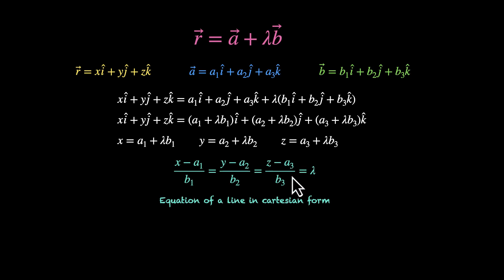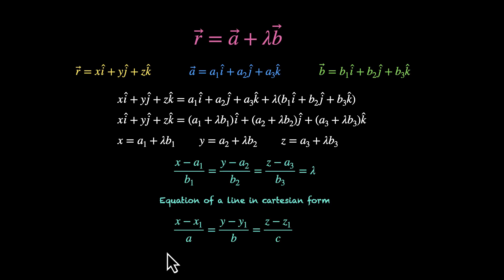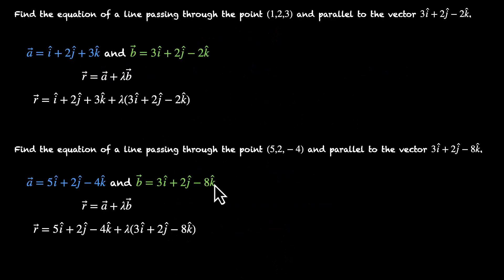In some textbooks, you might see this written as (x minus x1)/A = (y minus y1)/B = (z minus z1)/C, where x1, y1, z1 is the point, and A, B, C are the direction ratios of the vector parallel to this line. Now let's practice this — we'll take the same two examples and find the equation of our line in Cartesian form.